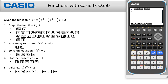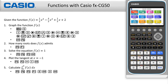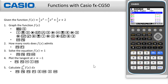Hello everyone. This is an example to solve functions with the Casio FX-CG50. Given the function f(x) equals one-third x cubed minus four-thirds x squared plus one-third x plus two. First, let's select the graph module of the calculator by pressing Menu then 5, and write the function.